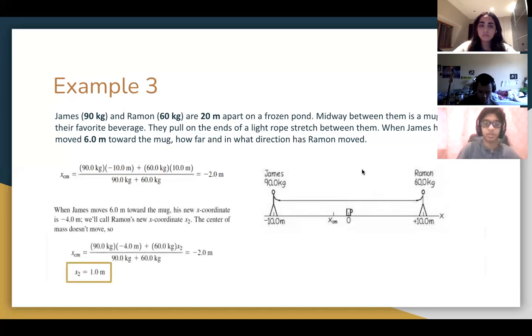But when James moves towards the mug, his new x-coordinate is minus 4 meters, because he moves from 10 meters away to 4 meters away. So we can find the new center of mass by doing 90 times minus 4 plus 60 times what is Ramon's new position divided by the total mass. And we can get that Ramon's new position is 1 meter. And it should be equal to minus 2 meters because the center of mass is not changing.